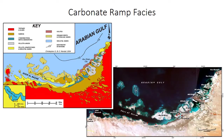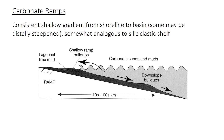Shallow carbonate dominated depositional environments come in two main categories: carbonate ramps and carbonate platforms. Although carbonate ramps are rare today, the Persian Gulf is probably one of the only and best studied examples. We're going to start with them because they share a lot in common with the siliciclastic shelves that you're familiar with from previous lectures.